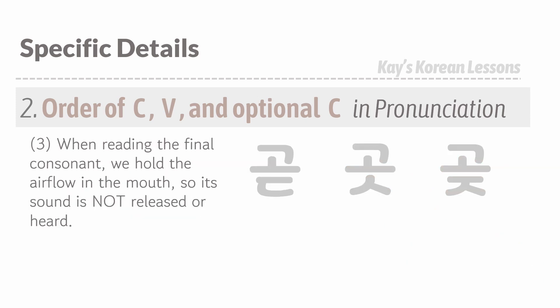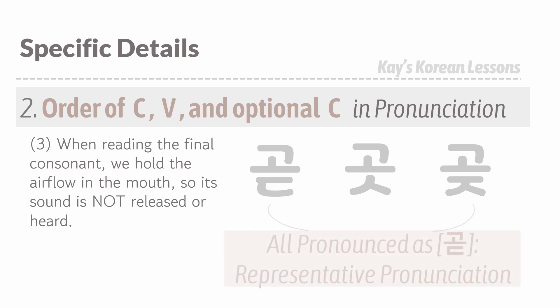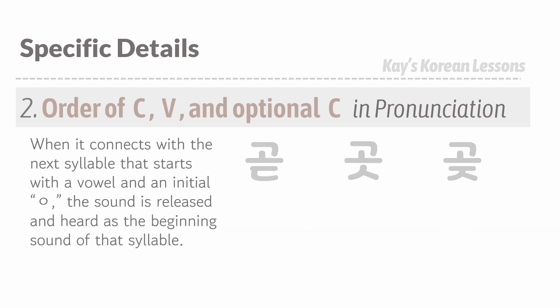The important thing about the final consonant is that its sound is not released or heard when we pronounce them. So these three examples here all have the same pronunciation: 곧, 곧, 곧.